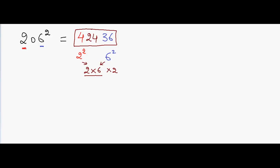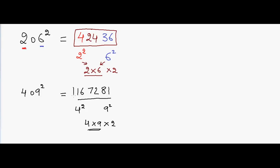Another example: 409 squared. 4 squared is 16, 9 squared is 81, and 4 into 9 into 2 is 72. So the answer is 167281.